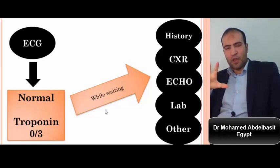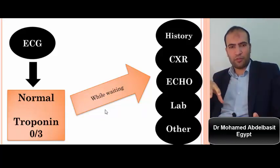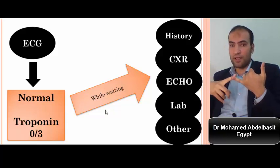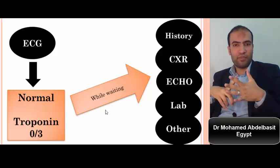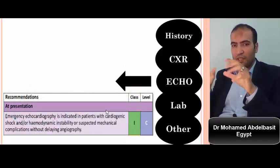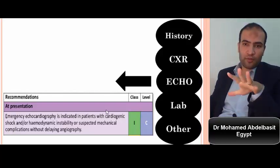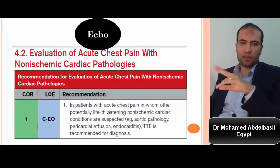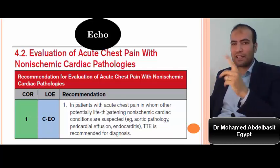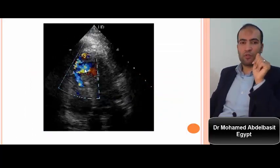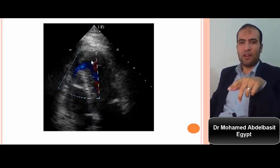If ECG is normal and the first enzyme set is negative while waiting for the second set at three hours, perform meticulous history taking and echocardiography. Echocardiography is very helpful, especially if the patient is in hemodynamic compromise or there is a high index of suspicion for ischemic heart disease. It will detect cardiac — and often non-cardiac — causes of chest pain. One patient with acute myocardial infarction was found on echocardiography to have an apical ventricular septal rupture (VSR), and another had acute mitral regurgitation — diagnosed by severe mitral regurgitation with normal LV dimensions — causing hemodynamic compromise and acute pulmonary edema.